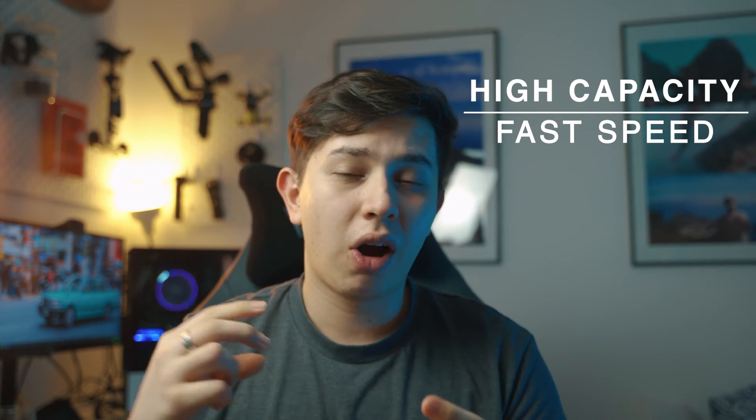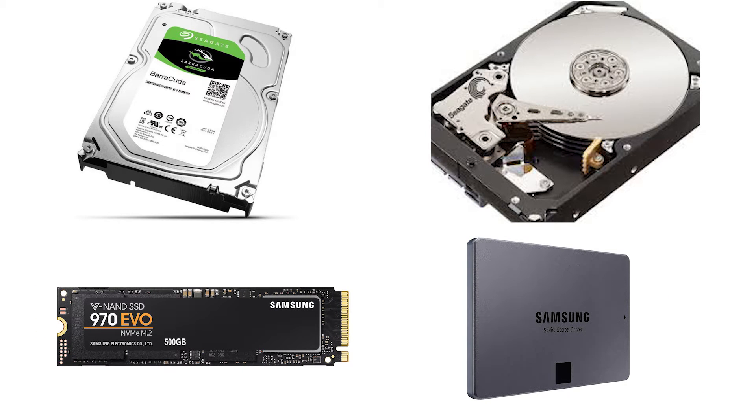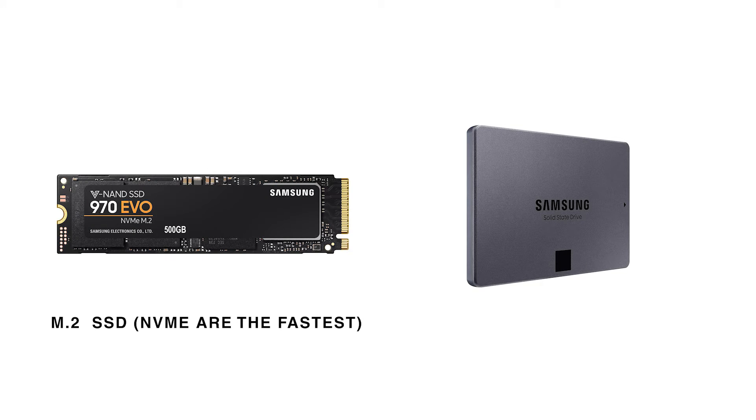Number five is storage — pay attention. If this is the slowest part of your computer, it will slow down your entire editing process, because your video editing software has to reference the media from where it's stored. For video editing you want high capacity and fast speeds. There are currently two types of storage: hard disk drives, which are mechanically spinning disks, and solid state drives, which are electronic chips. For solid state drives there are two types: M.2 drives, which go directly onto your motherboard, and SATA 2.5-inch drives that go to the back of your PC.